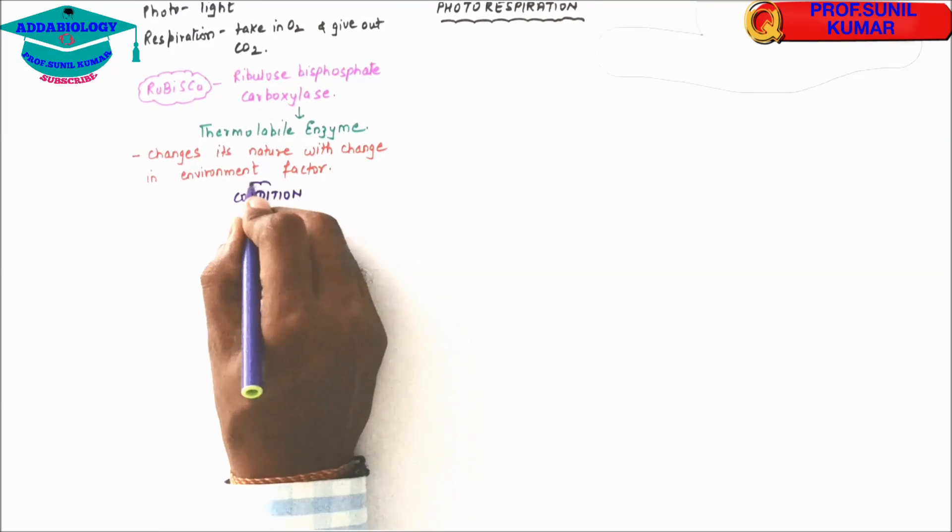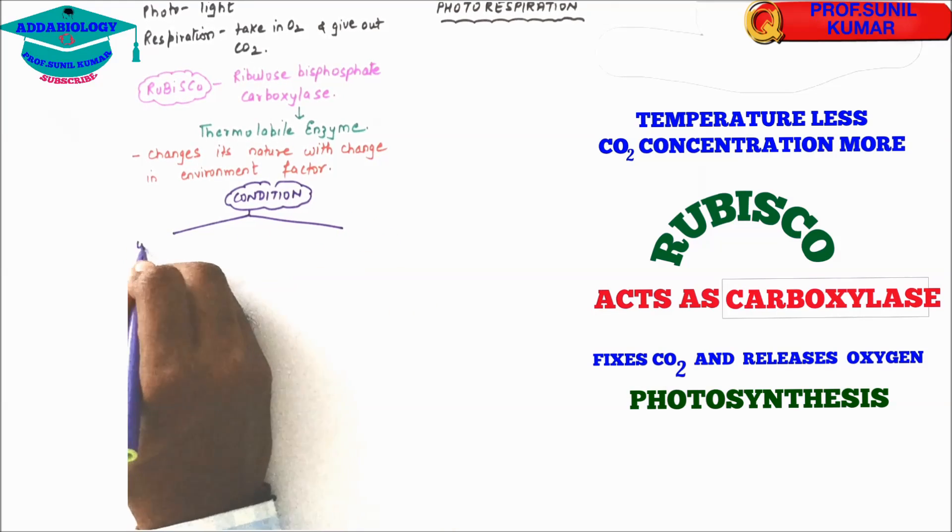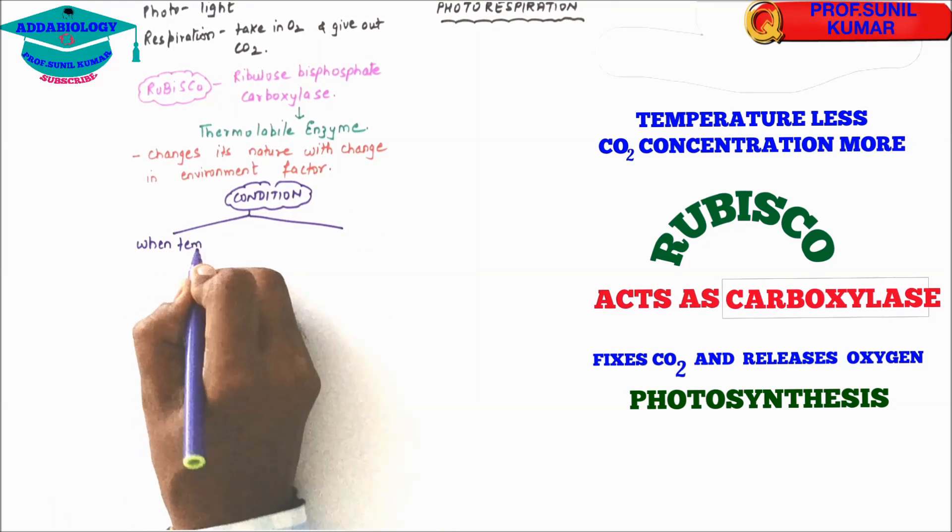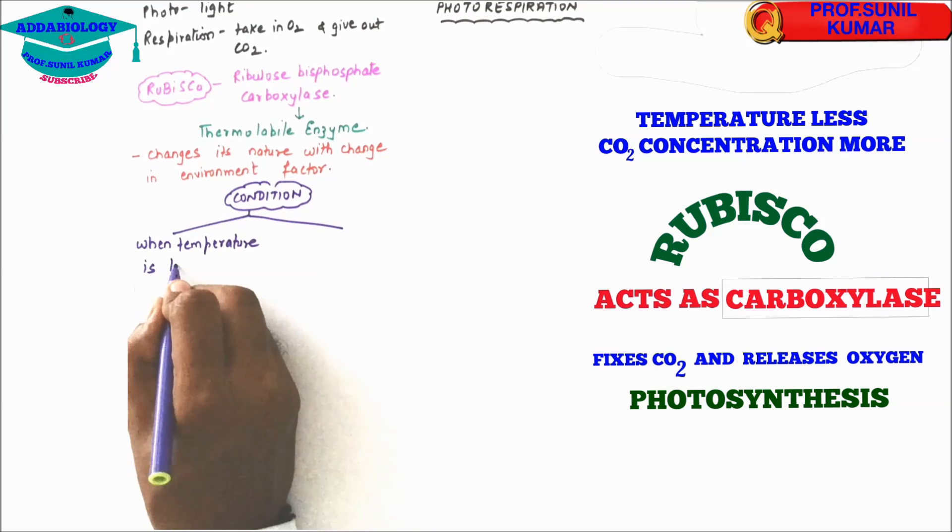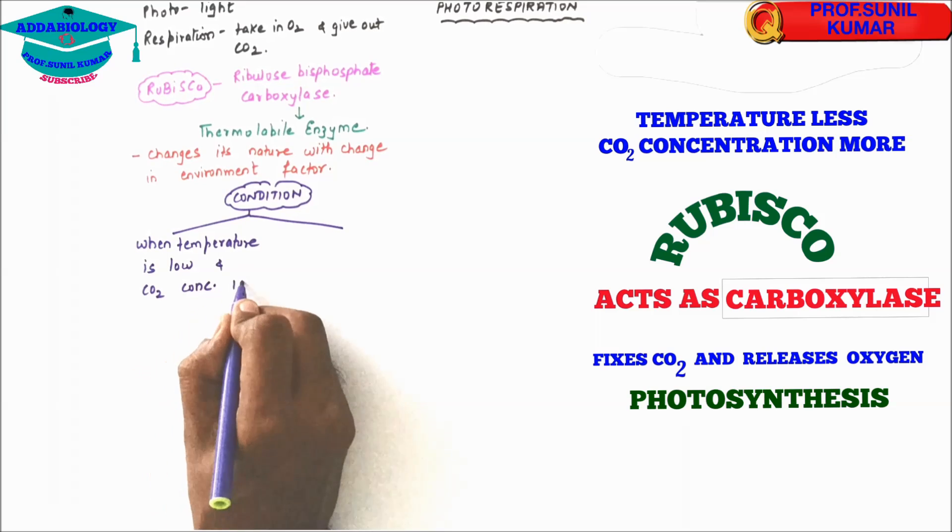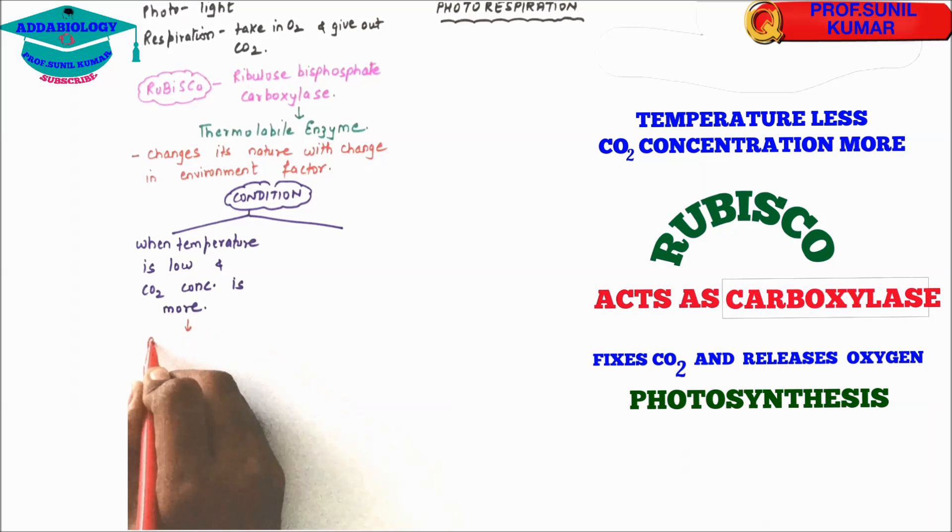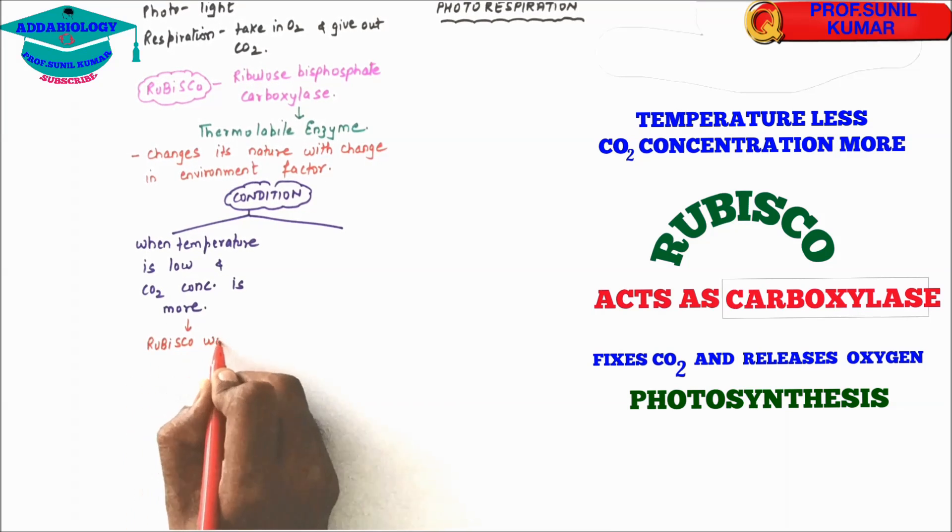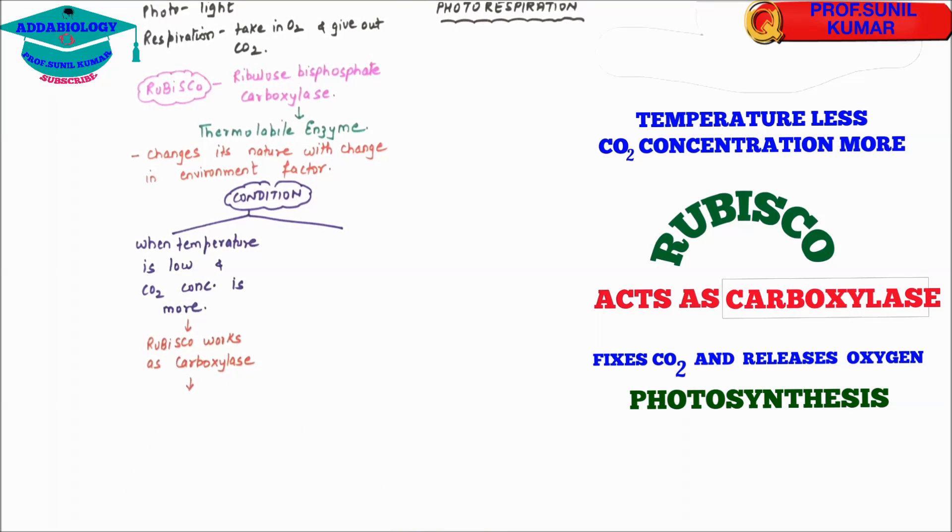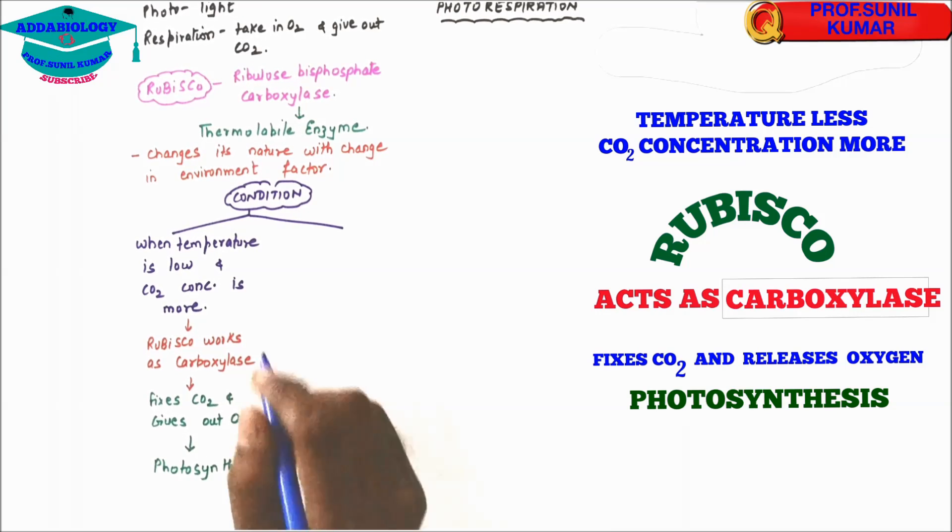Let us understand the conditions. There will be two conditions. In first condition, the temperature is less like in the morning time and the carbon dioxide concentration is more because stomata is open. So under this condition, rubisco is going to work as carboxylase. When I say carboxylase, it simply means that rubisco will fix carbon dioxide. If you remember Calvin cycle where RUBP combined with carbon dioxide in the presence of rubisco. So taking in carbon dioxide and giving out oxygen, it is photosynthesis.